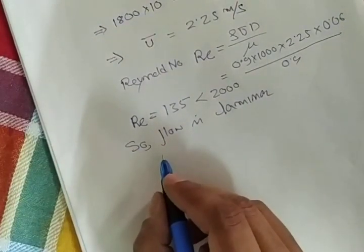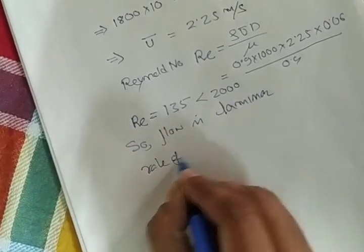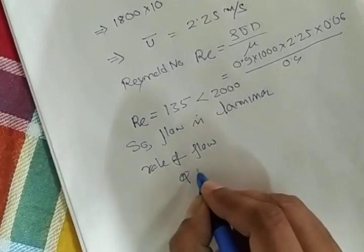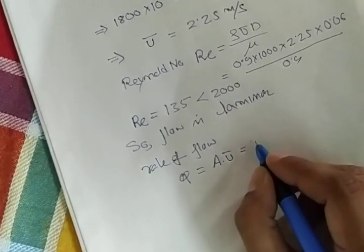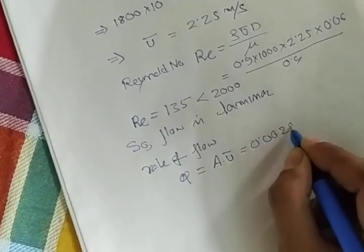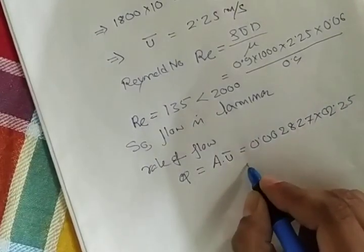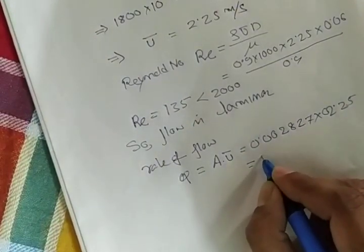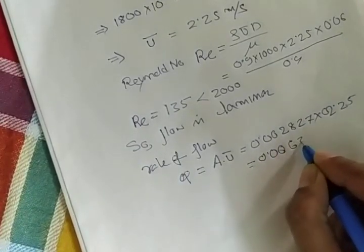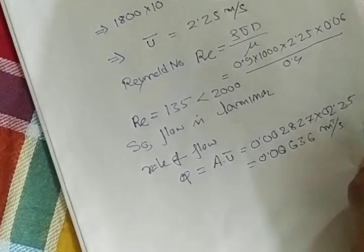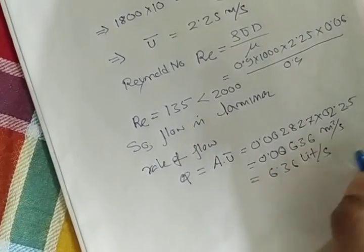You have to find out rate of flow, that is q. Q equals a into u bar. So a which is 0.002827 into 2.25. If you do the calculation, you will get 0.00636 meter cube per second, or you can convert this to 6.36 liter per second.